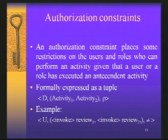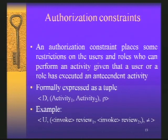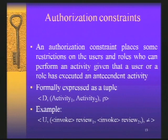Our model supports authorization constraints that place restrictions on users and roles. They restrict which users or roles can perform an activity given that a user or role performed an antecedent activity. We formally define these constraints as a tuple with three main components: activity one and activity two to which the constraint applies, and a binary relation defined on a domain D, which can be a set of roles or users. This binary relation expresses the condition that the users executing activity one and activity two must satisfy. For example, a separation of duty constraint for invoke review one and invoke review two states that the users performing these two activities must be different.